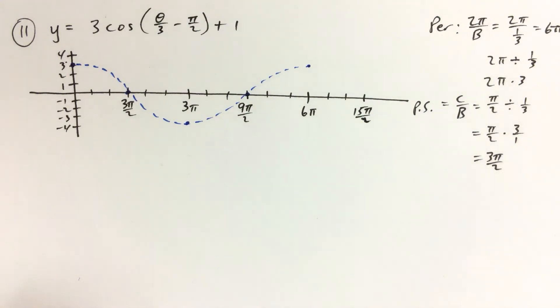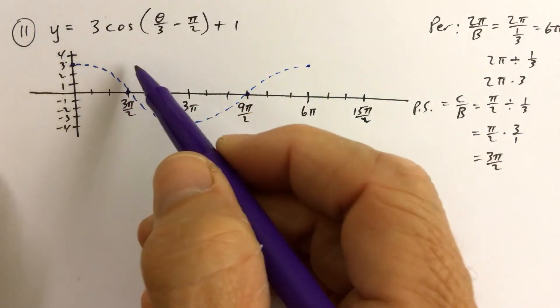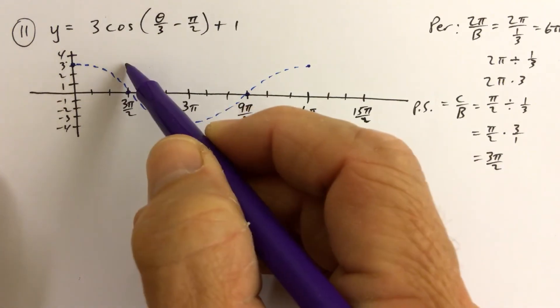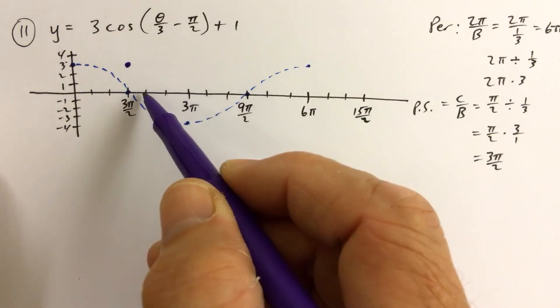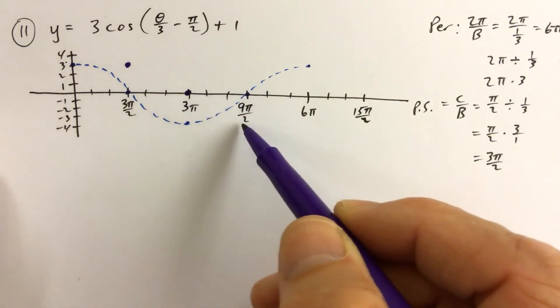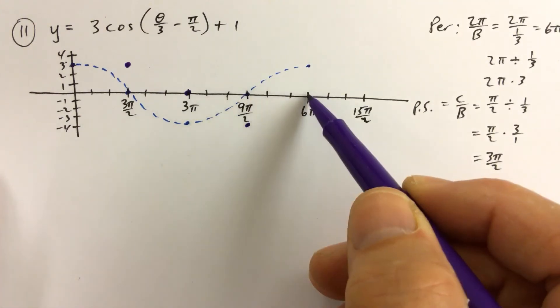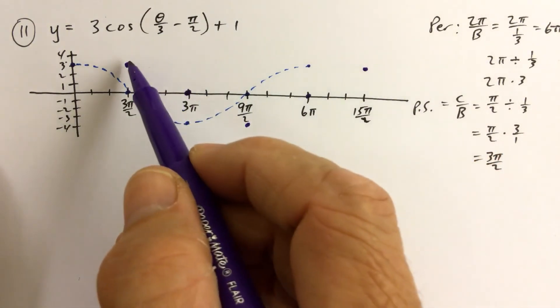And anyway, now that we have that, we just move each of these dots, each of these key points, 3π over 2 radians to the right. So that gets moved to the right. The one on there gets 1, 2, 3π over 2 to the right. Everything gets moved over to the right 3π over 2 radians. And then we connect the dots.